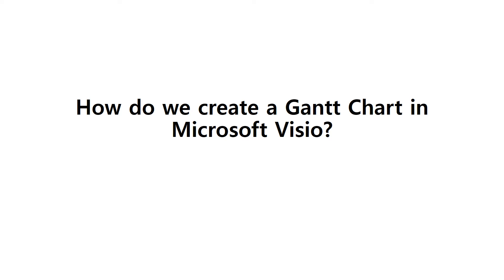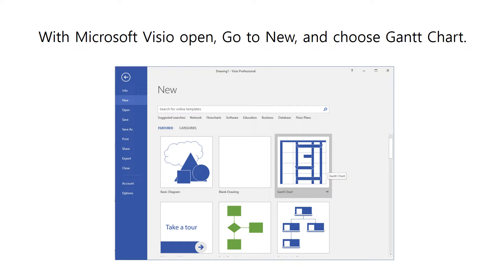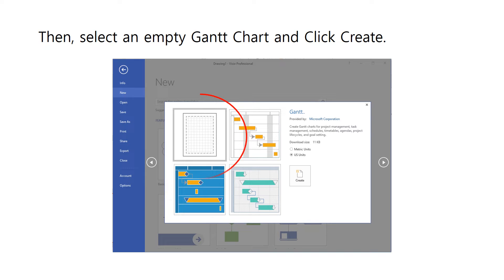So, how do we create a Gantt chart in Microsoft Visio? To create a Gantt chart in Microsoft Visio, we simply follow these steps. First, with Microsoft Visio open, go to New and choose Gantt chart. Then select an empty Gantt chart and click Create. You can also select already predefined templates, but to have a better understanding, we just start from scratch.